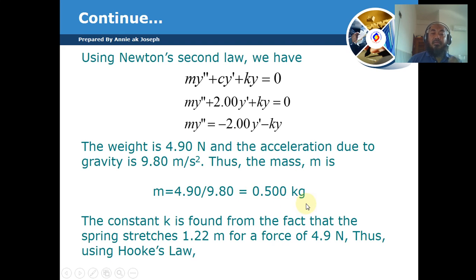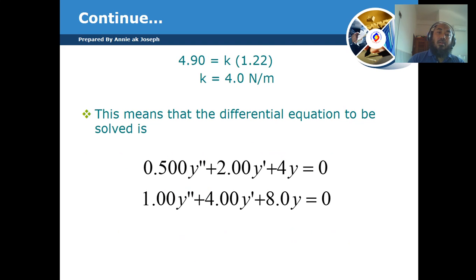The constant k is found from the fact that the spring stretches 1.22 m for a force of 4.9 N. From Hooke's Law, force equals the spring constant multiplied by the displacement.